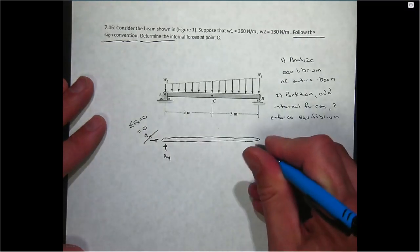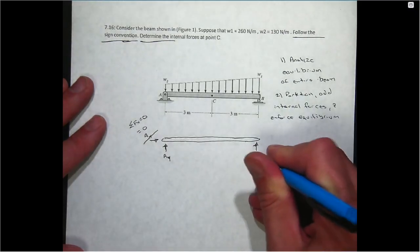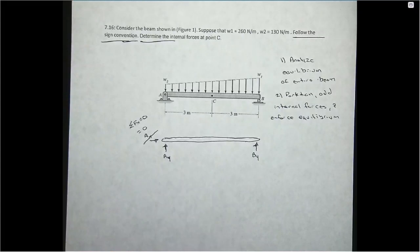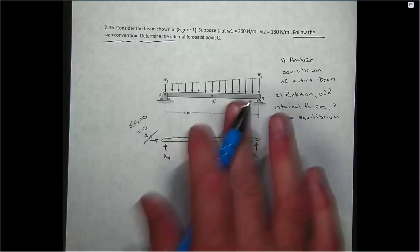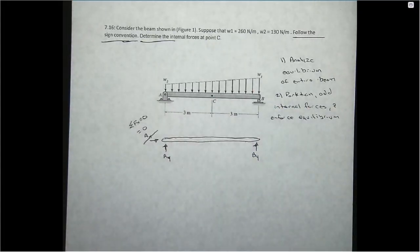In order to enforce equilibrium of this body, I can draw a free body diagram. Since A is a pin connection, it in general could have an unknown vertical and horizontal component. However, since this beam is loaded with no horizontal forces, I know that is zero by the fact that the sum of all forces in the x direction must be zero.